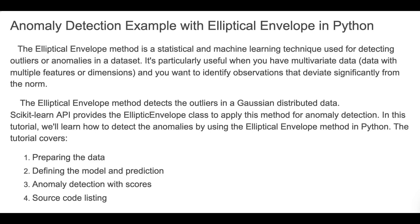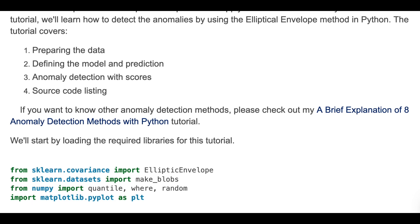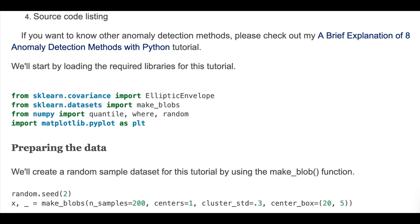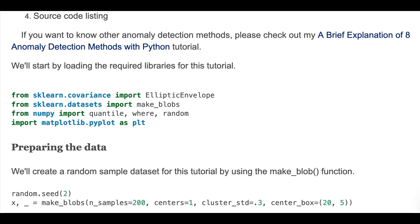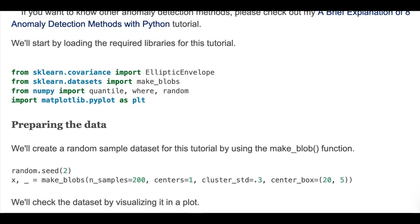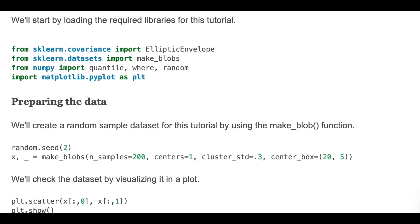First, we'll start by loading the required libraries for this tutorial. Here we use sklearn.covariance, datasets, numpy, and matplotlib libraries. We'll create random data for this tutorial using the make_blobs function. Here's the code to generate the random data, and we'll visualize it in a scatter plot.